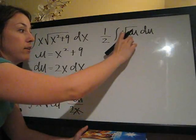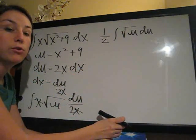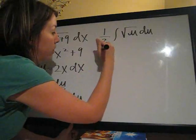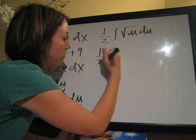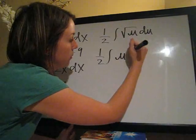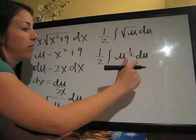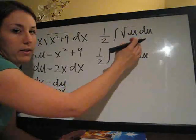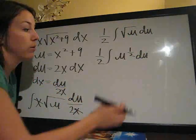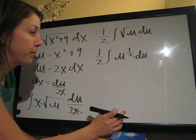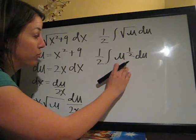We're going to go ahead and change the square root of u to something we can deal with more easily. 1 half times the integral of u to the 1 half du. We've defined this as a rule, that this is just a formula. If you don't know, square root of u is the same thing as u to the 1 half, always. So, we can deal with this more easily.